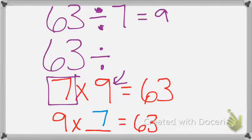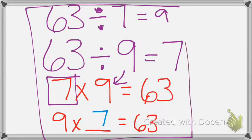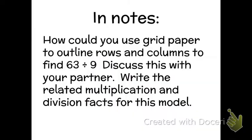And I can also reverse those. So I could do 63 divided by 9 which would give me 7. These 4 problems right here are a part of what we call a fact family. These are all of the related multiplication and division problems that would equal there.